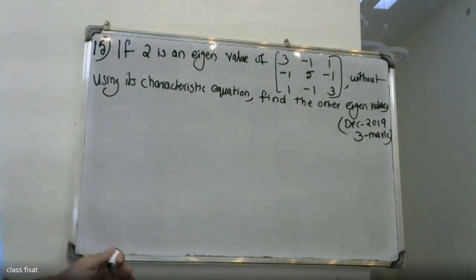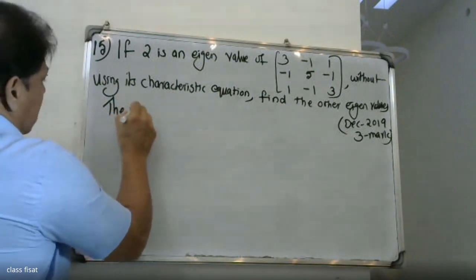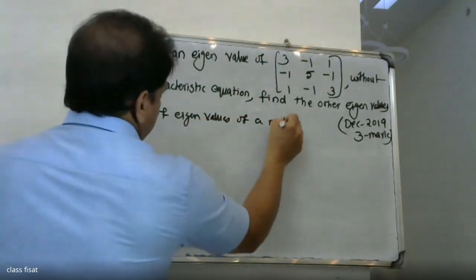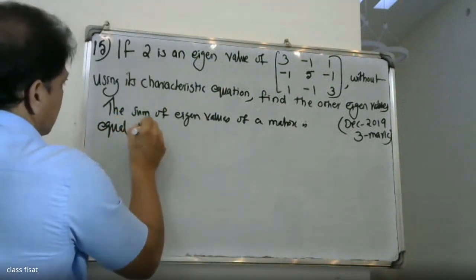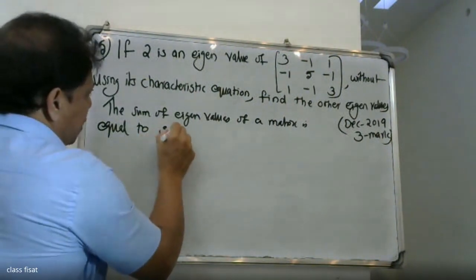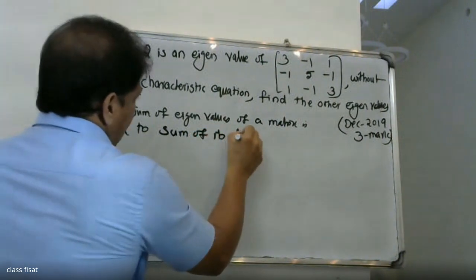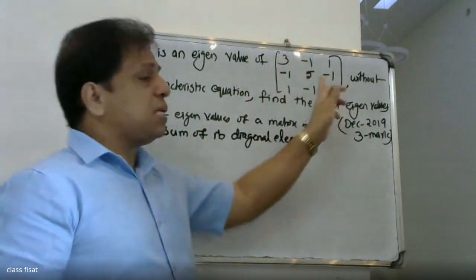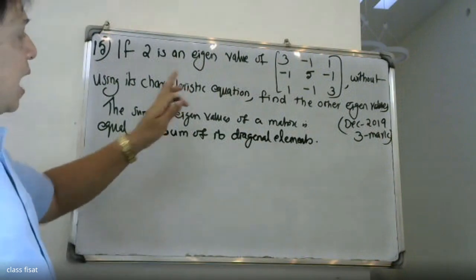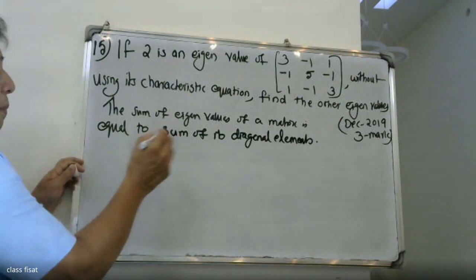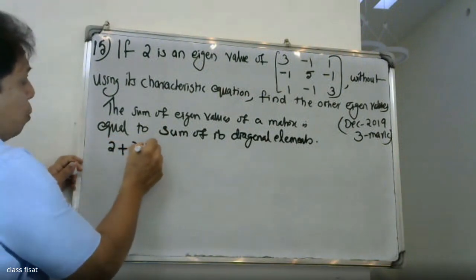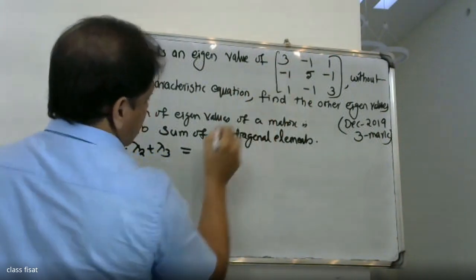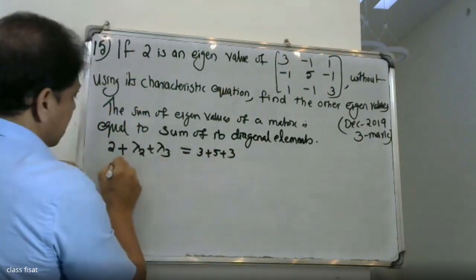The sum of eigenvalues of a matrix is equal to the sum of its principal diagonal elements — that is, the trace. The principal diagonal elements are 3, 5, and 3, so the trace equals 3 plus 5 plus 3. Therefore, 2 plus λ2 plus λ3 is equal to 11.